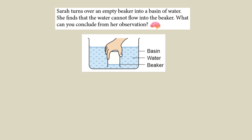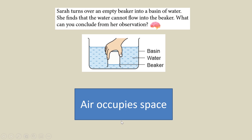Let's answer a few questions. Sarah turns over an empty beaker into a basin of water and finds that the water cannot flow into the beaker. What can you conclude from her observation? The conclusion is: air occupies space, therefore water cannot enter the beaker.